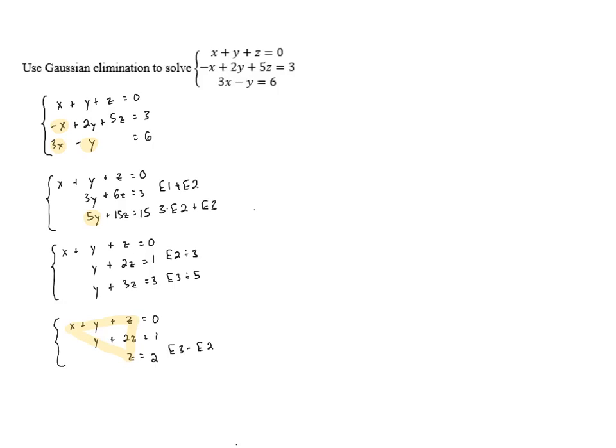We know that z is 2. We can plug that into the second equation to figure out what y is. y plus 2 times z, which is 2, equals 1. 2 times 2 is 4, and if we subtract 4 from both sides, that gives us y equals negative 3.